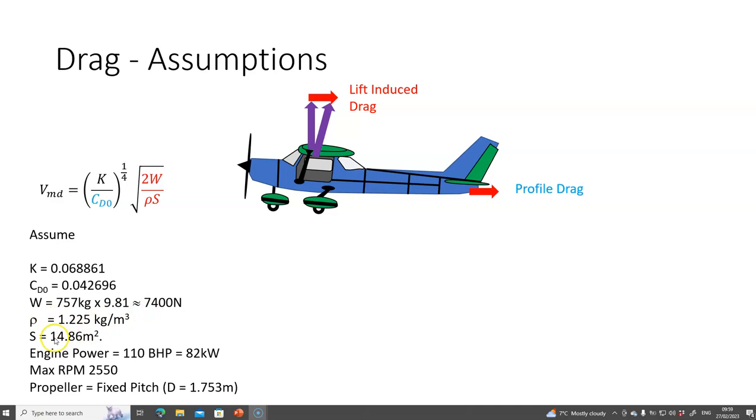We'll take density at sea level value. The wing area is 14.86 square meters. The engine is 82 kilowatts with a max RPM of 2550, and the propeller is a fixed pitch propeller where the diameter is 69 inches or 1.753 meters.